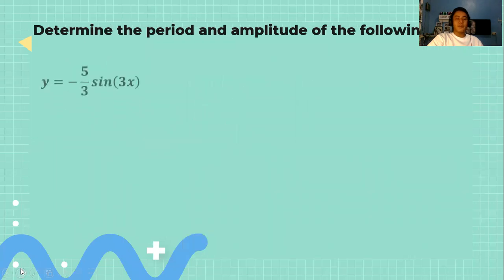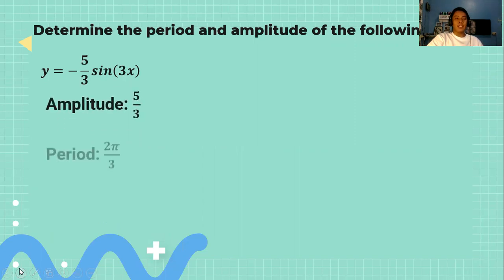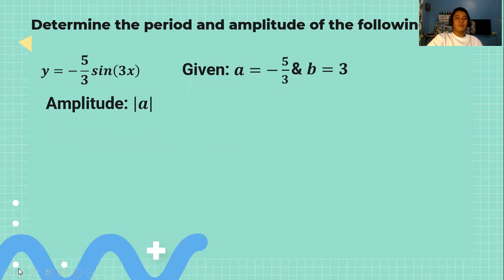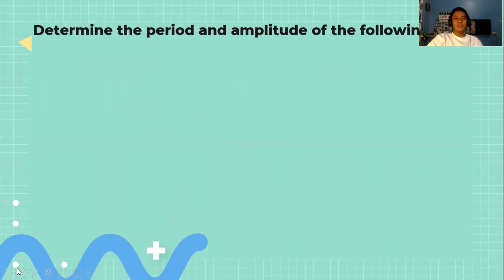Next example: y = -5/3·sin(3x). The amplitude is 5/3 and the period is 2π/3. With a = -5/3 and b = 3, the amplitude is |-5/3| = 5/3. For the period, we have 2π / |3| = 2π/3. Very straightforward.